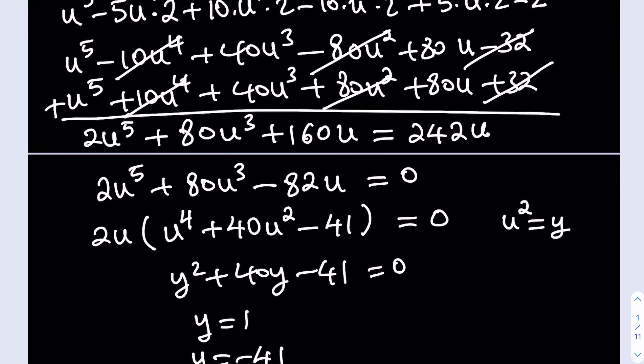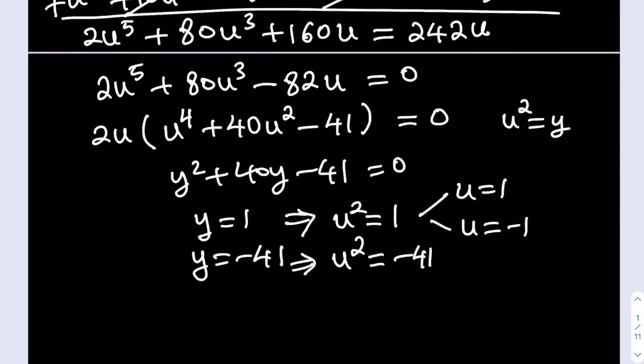So those are going to be the two solutions that we get from this equation. But y is equal to u^2, so from here, we get u^2 = 1, which means u=1 or u=-1. What about the second part? Well, if u^2 = -41, we do not get any real solutions from here. We do get complex solutions. What kind of complex solutions do we get? We do get √(41)i and -√(41)i. So those are going to be the solutions that we get.